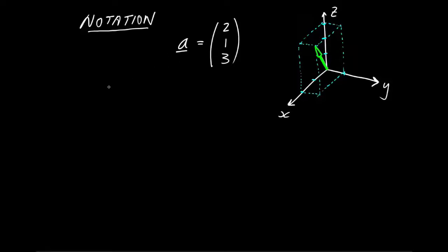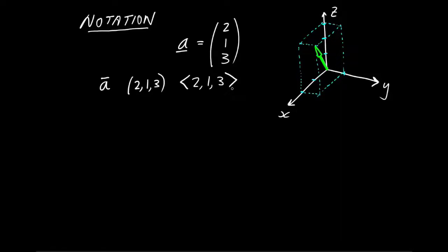Other people may use other notations. For example, a line over the symbol A is commonly used. When people write out the components, they may choose to do it as a row, or even using pointy brackets. All these notations are getting at the same thing. You'll be able to read textbooks or look online and understand what they mean. But within this course we'll just use the notation introduced above.